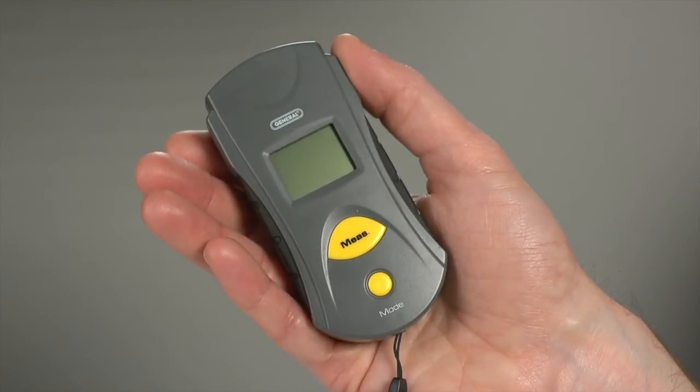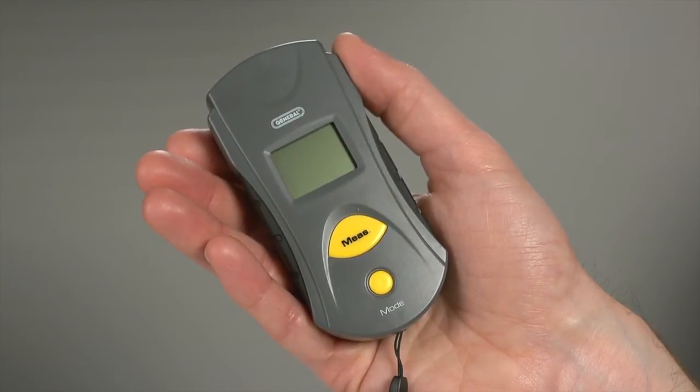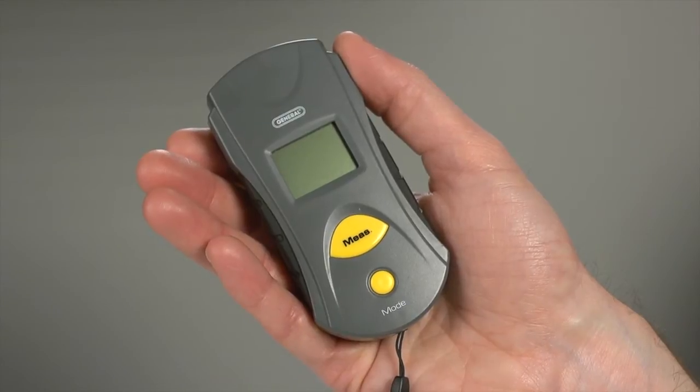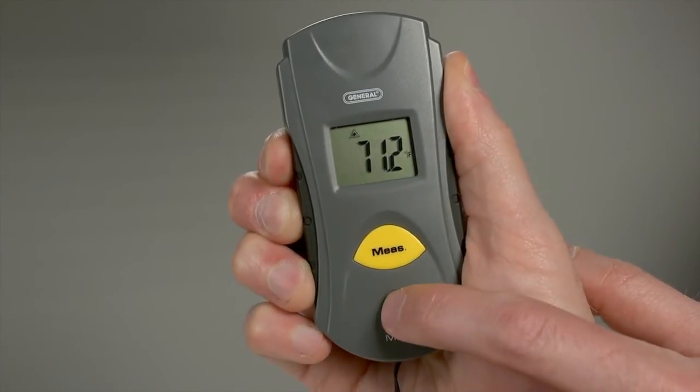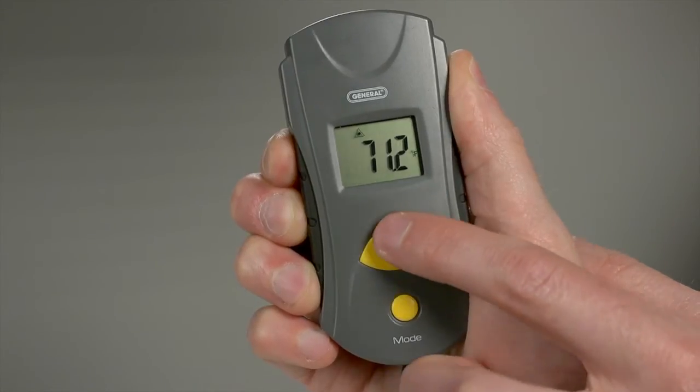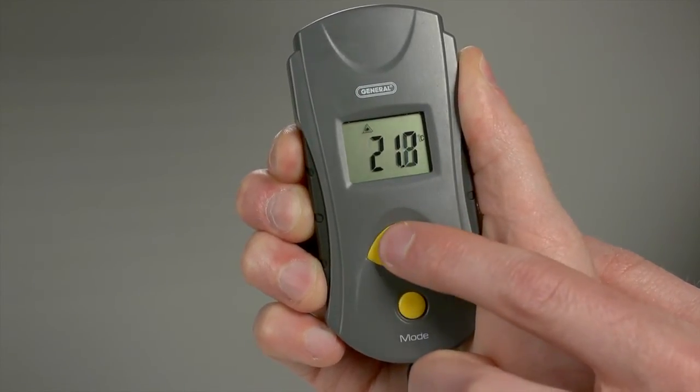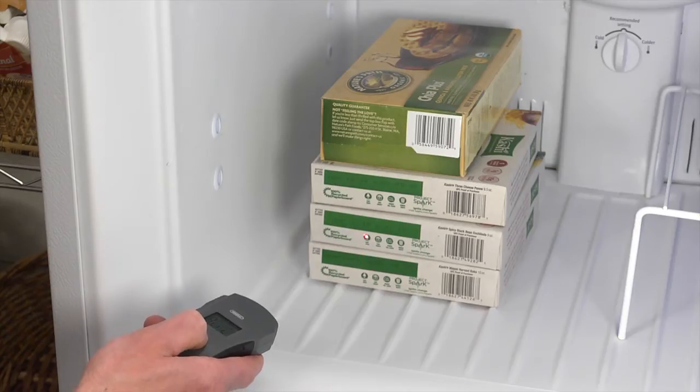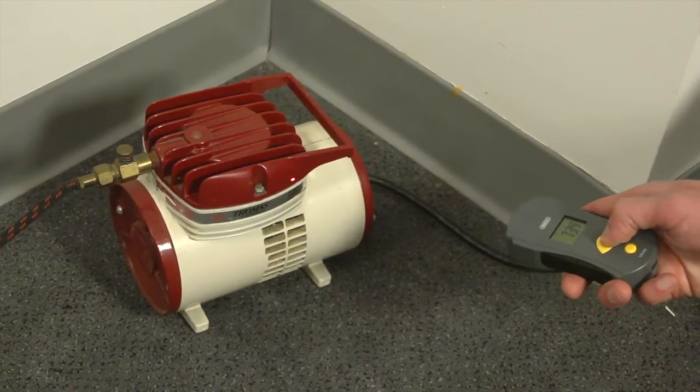Don't let the small size and lightweight fool you. The IRT-105 has powerful capabilities. Measure temperatures from negative 22 to 482 degrees Fahrenheit, or measure in Celsius. Check surface temperatures of foods, machinery, and much more.